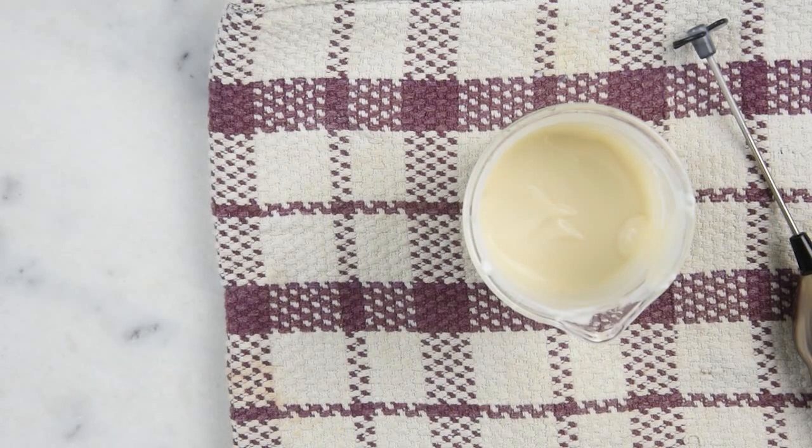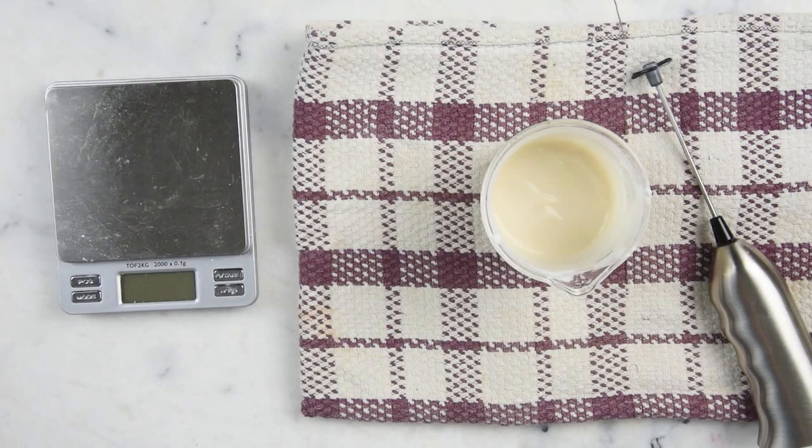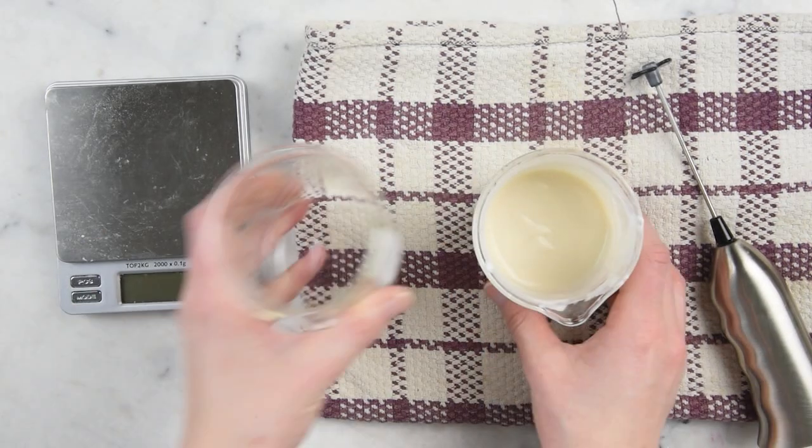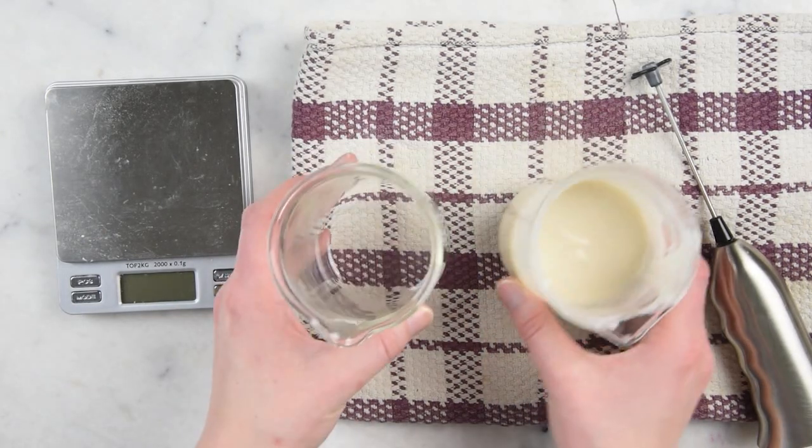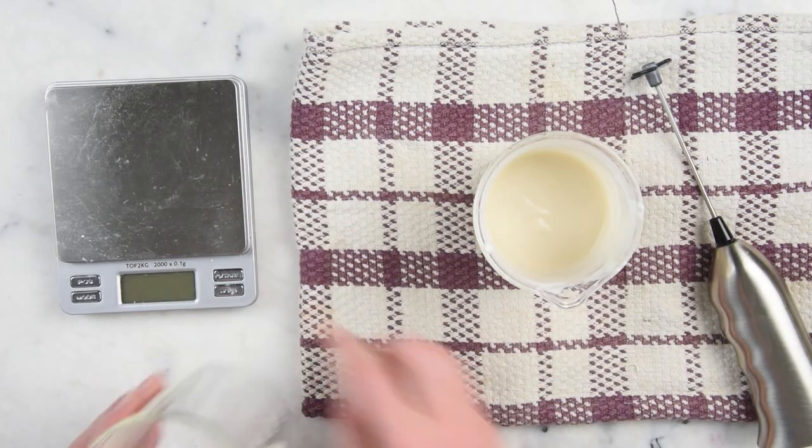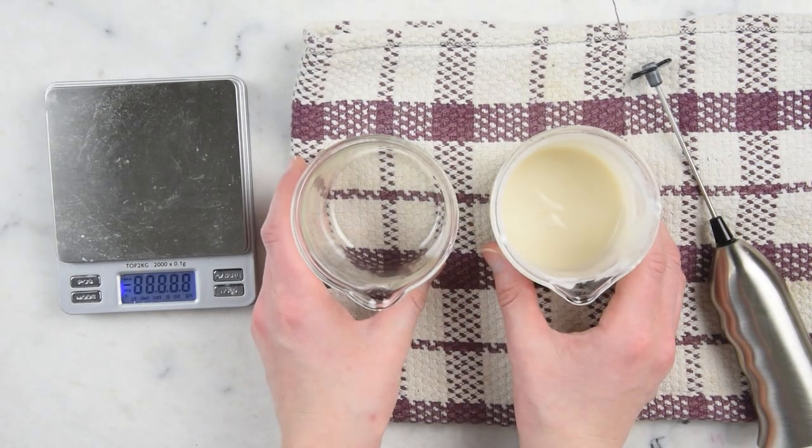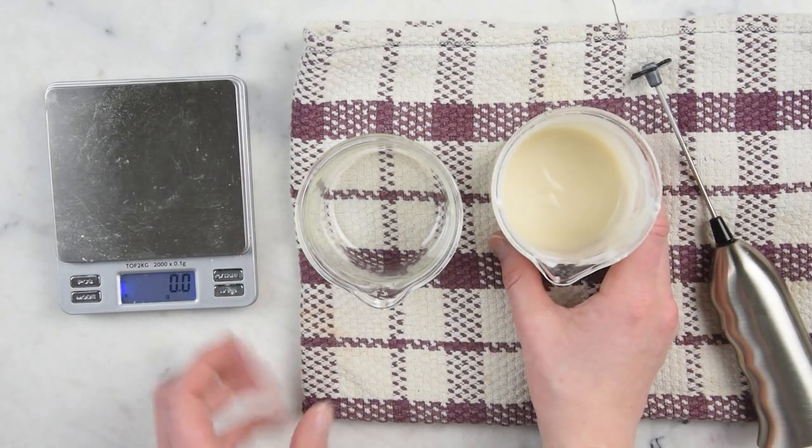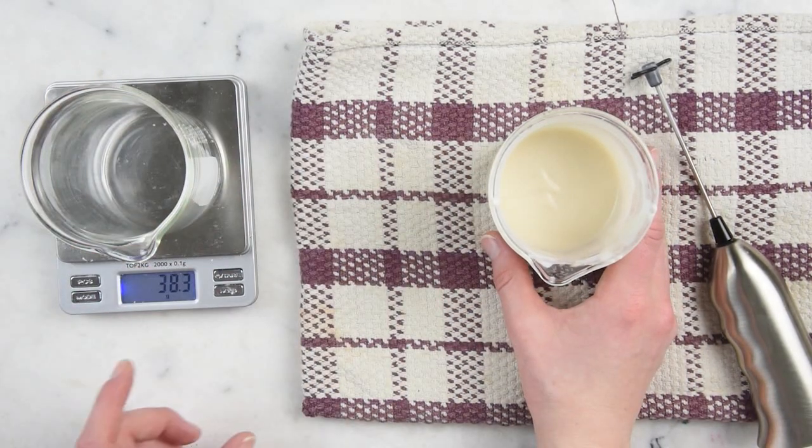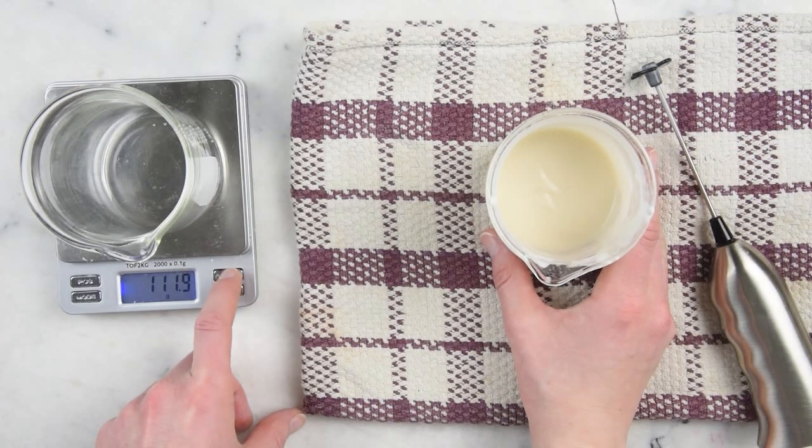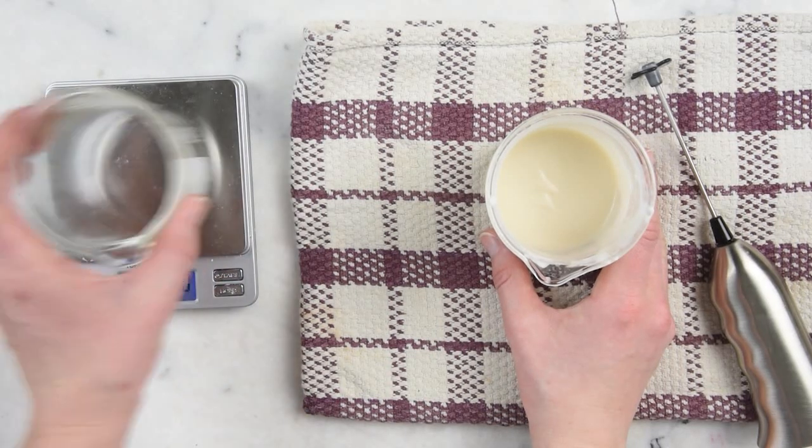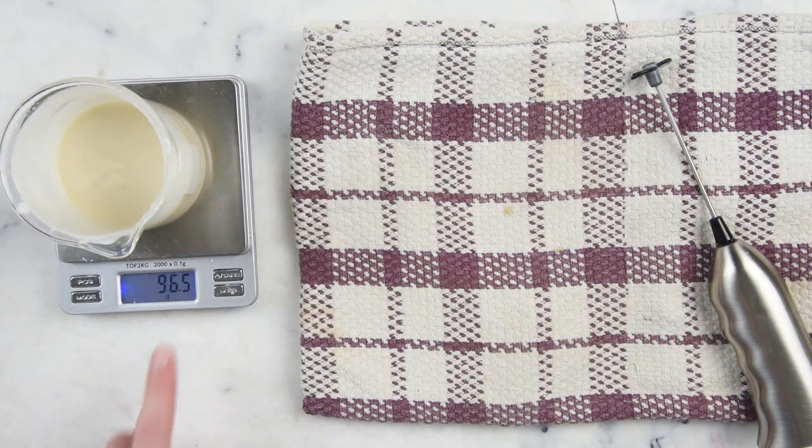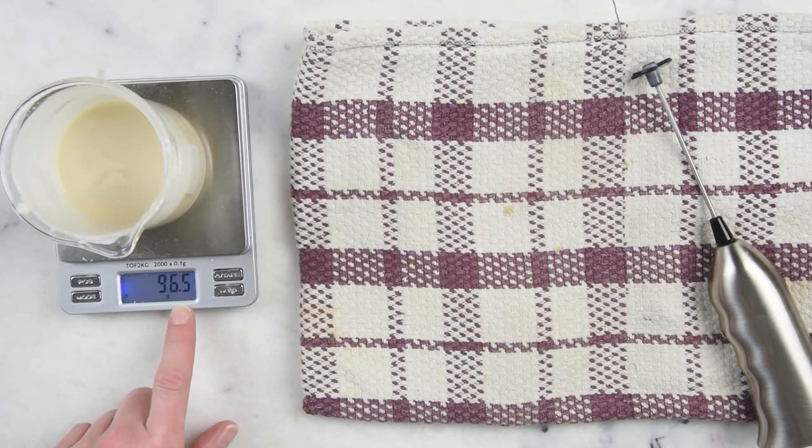And now for our preservative. In order to determine how much preservative we need, first we need to determine how much of this there is. So I have two identical beakers, so I'll be able to use this little trick. But if you don't have two identical beakers, make sure you weigh the container that you're making your lotion in and write that number down beforehand. So I can pop empty beaker on here, tare the scale, remove that on there. And that is our final lotion weight.